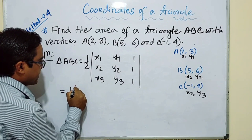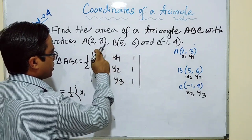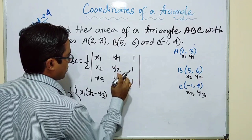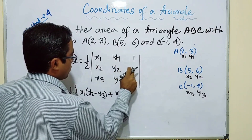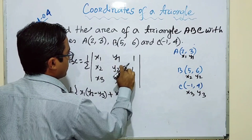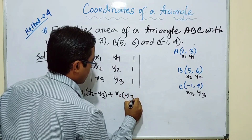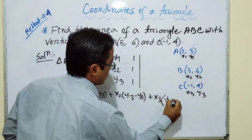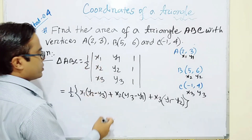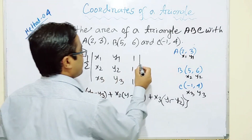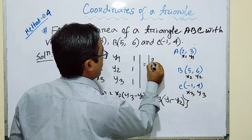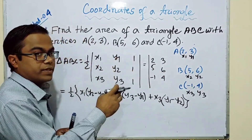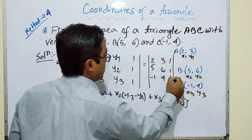Expanding the determinant: taking x1, remove its row and column to get (y2 - y3). Taking x2, remove its row and column to get (y3 - y1). Taking x3, remove its row and column to get (y1 - y2). Substituting x1=2, x2=5, x3=-1 and y1=3, y2=6, y3=4: area = half of [2(y2-y3) + 5(y3-y1) + (-1)(y1-y2)].